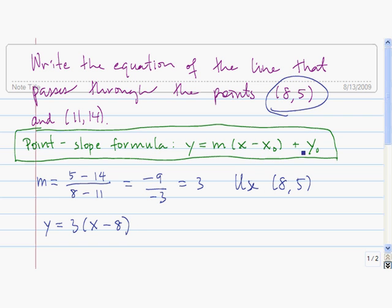So x minus x0 plus y0. y0 is the y-coordinate of the given point, and that's 5.